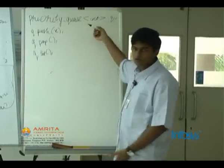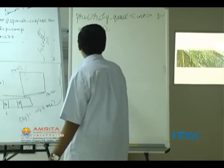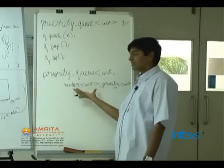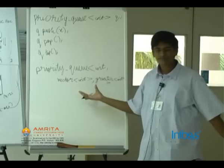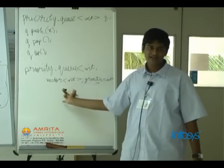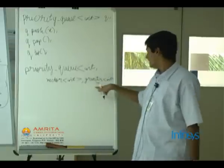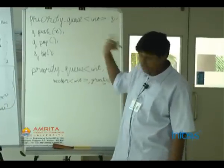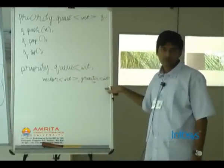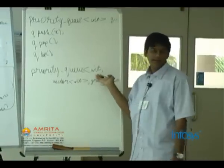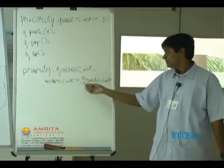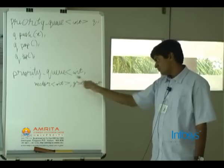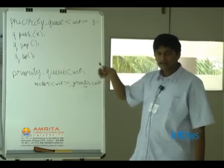To create a min-heap for integers, use: priority_queue<int, vector<int>, greater<int>>. The vector<int> is the underlying container — always give it as vector<int>, no need to change it. greater<int> defines the comparison so the heap becomes a min-heap instead of a max-heap.